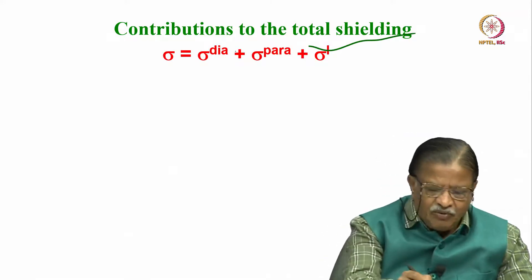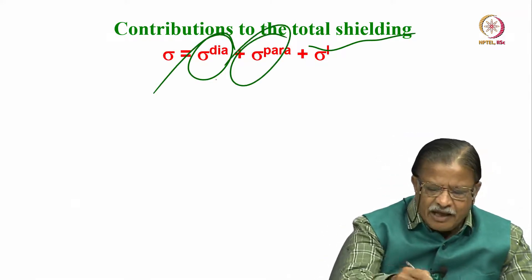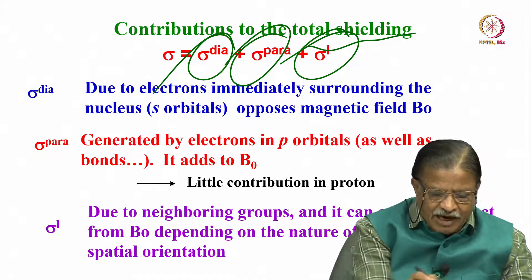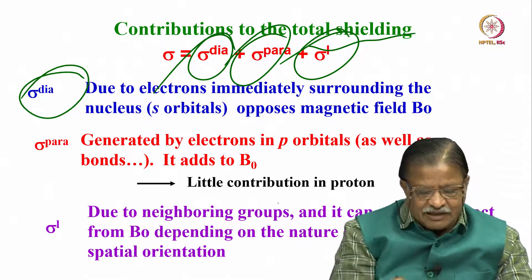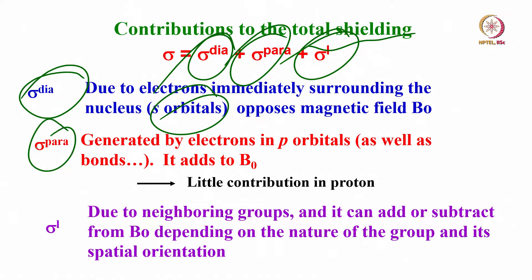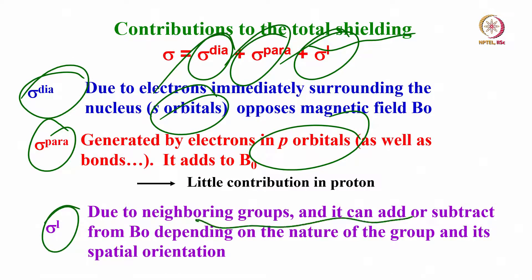There are different types of contributions to shielding: diamagnetic contribution, paramagnetic contribution, and neighboring group contributions. Diamagnetic contributions come from s orbitals in the molecule; paramagnetic contributions come from p orbitals and other effects; neighboring group effects come from groups present nearby. All of them contribute to the chemical shift chart being only a guideline, as there could be deviations.